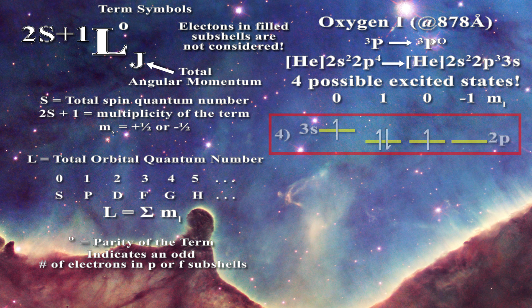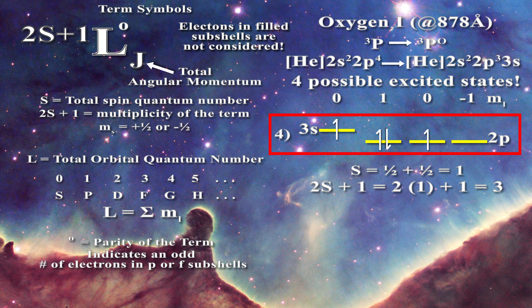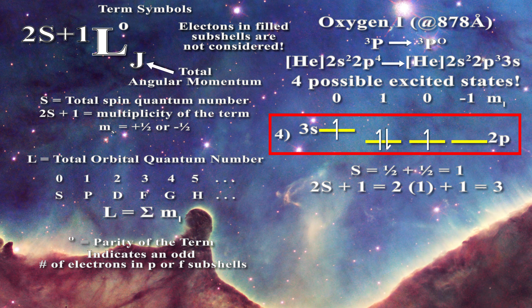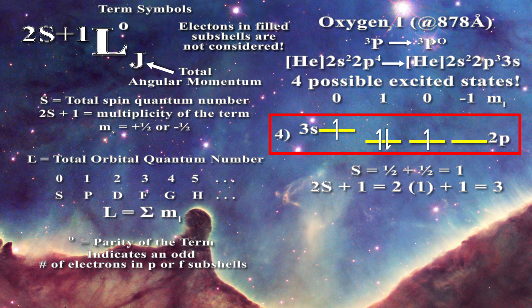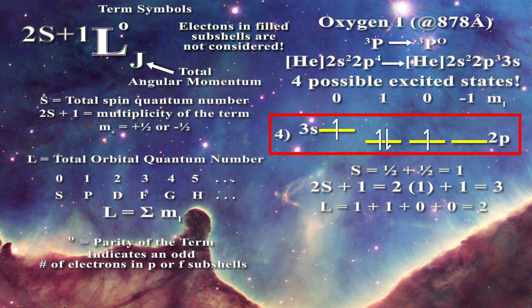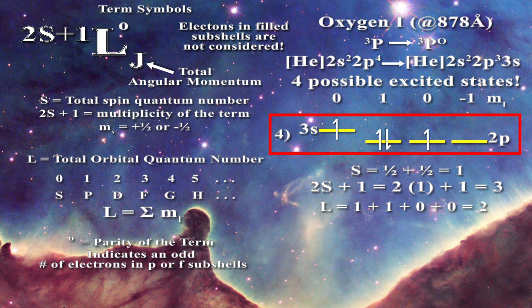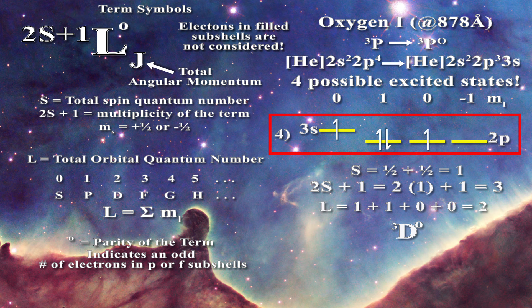If you examine the fourth possibility you will find that the term symbol is a triplet D state with parity. Two electrons are found in the m sub l equal 1 orbital and the other electrons reside in m sub l equal 0 p and s orbitals. The orbital quantum number is then one plus one plus zero plus zero, which equals two — and since the orbital quantum number is equal to two the term symbol must be D. There is an odd number of electrons once again in the p orbitals, so we have parity.